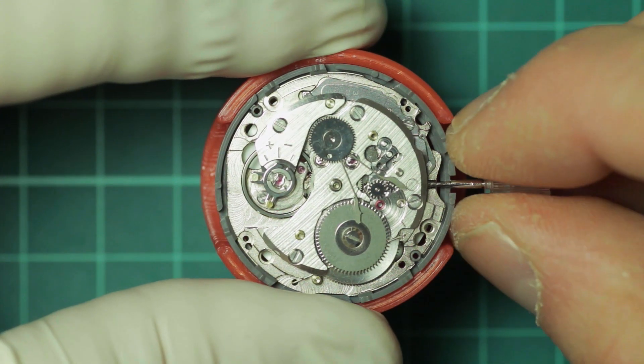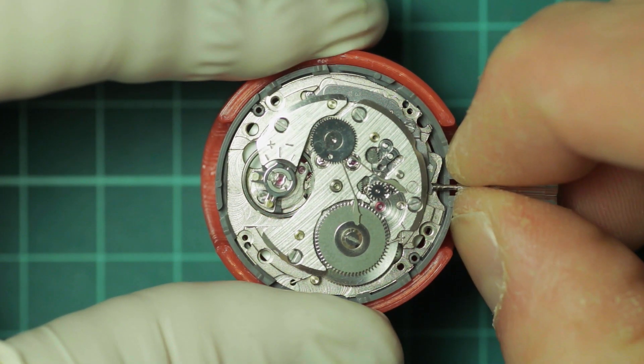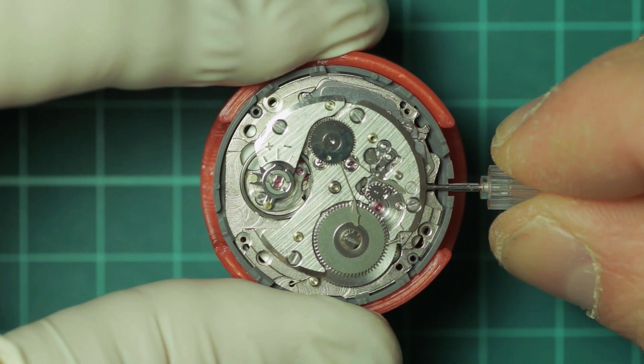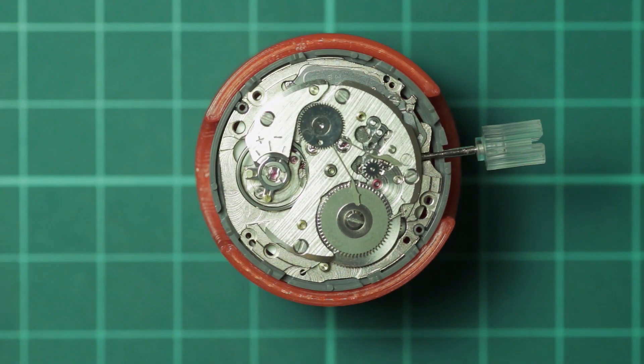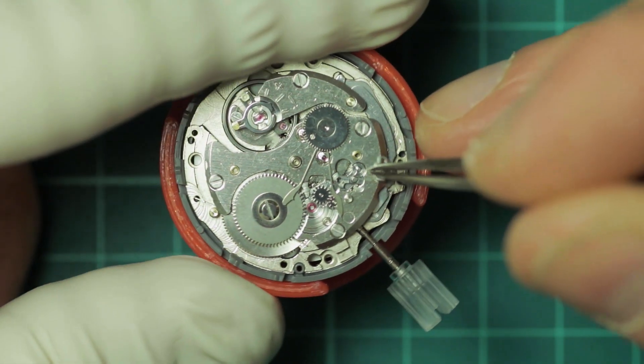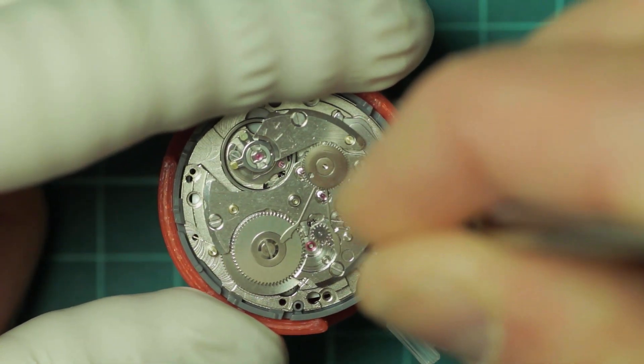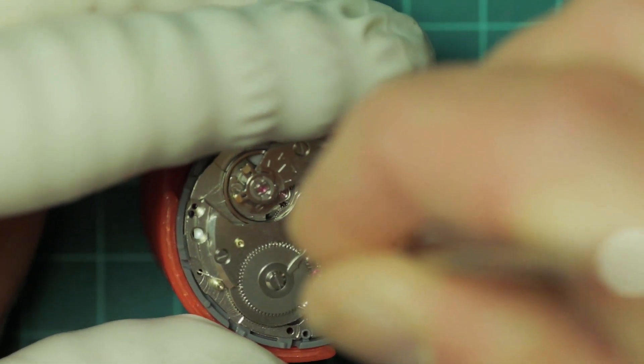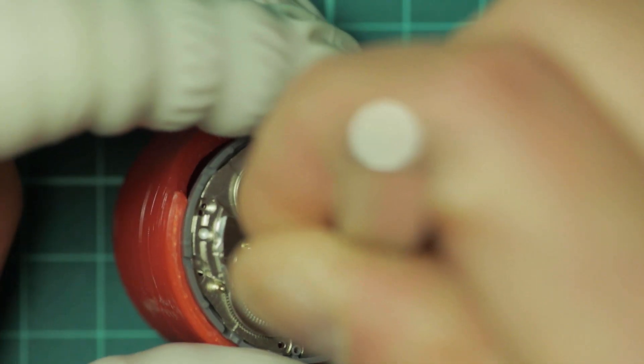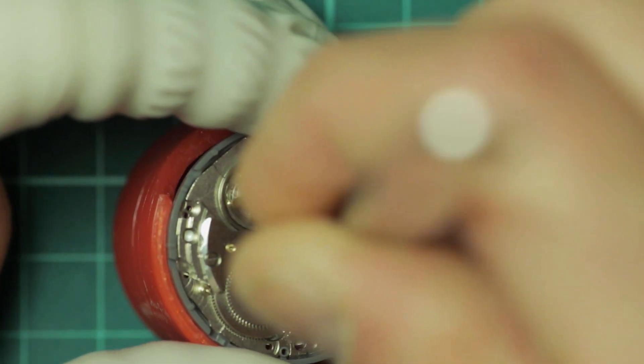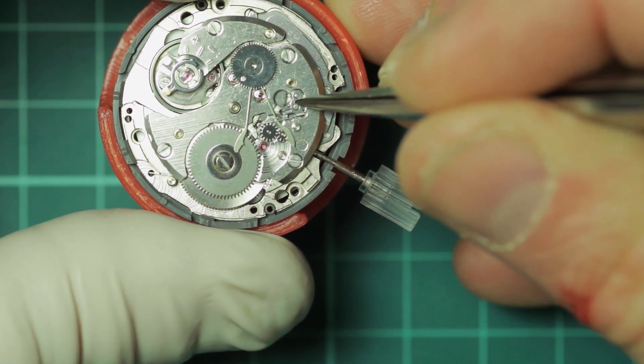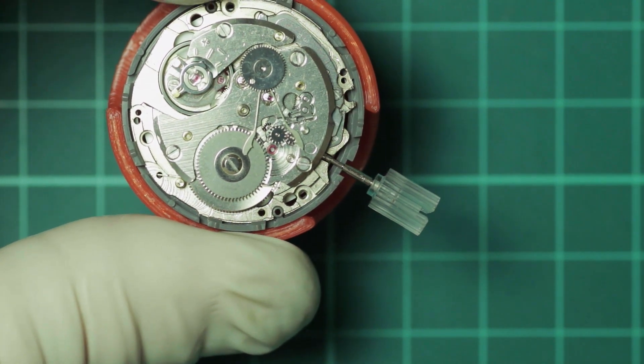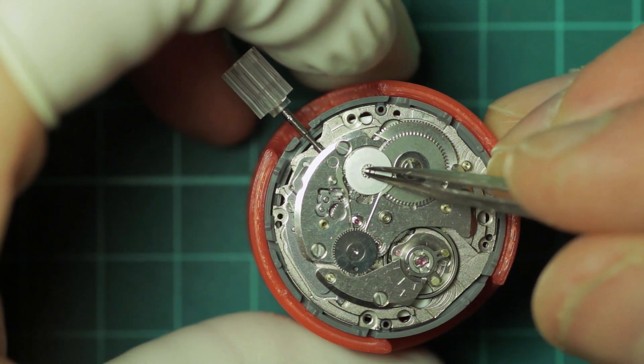And also just to demonstrate that you can get really surprising performance from such a nice cheap little movement. There I was just showing how the hacking system worked. When you pull the stem fully out, the lever will contact the balance and stop it. And at this point here I'm just refitting the small tension spring which maintains tension on one of those rocking gears.